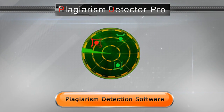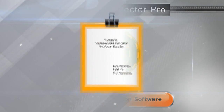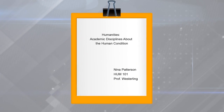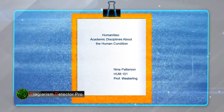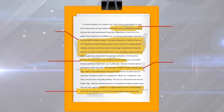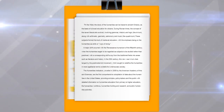Check texts for plagiarism in just minutes with Plagiarism Detector Pro. The document was supposed to be an original work, but how can you know for sure that it is? To verify, you have to check the document against thousands of possible sources of borrowed text.